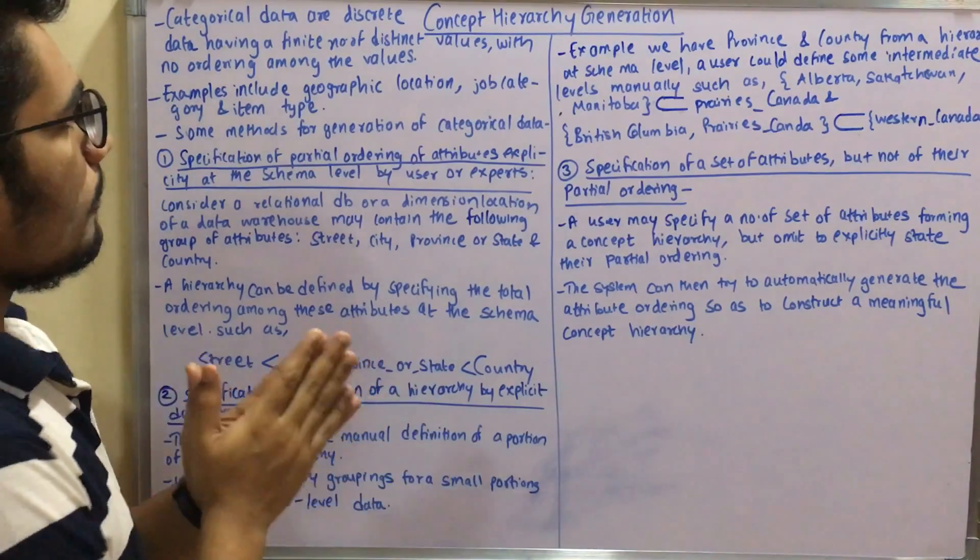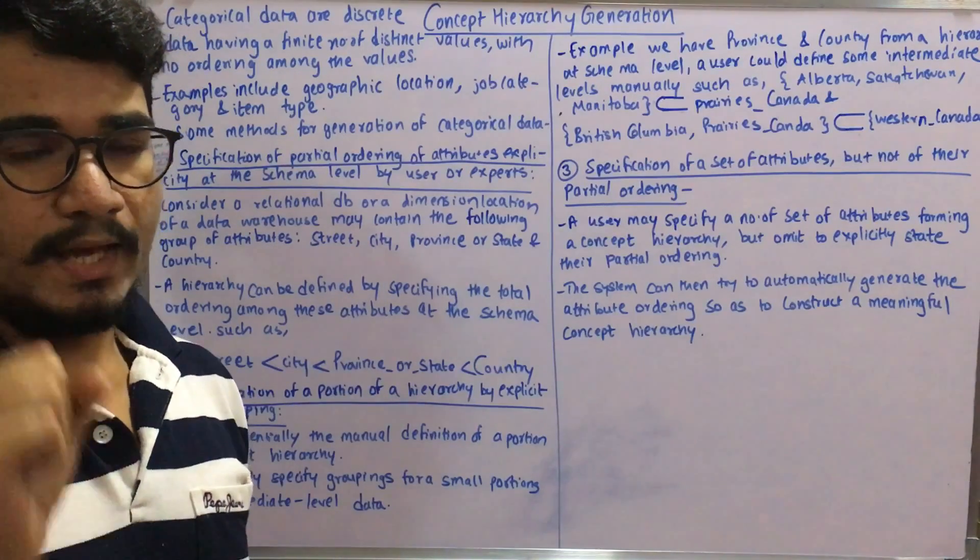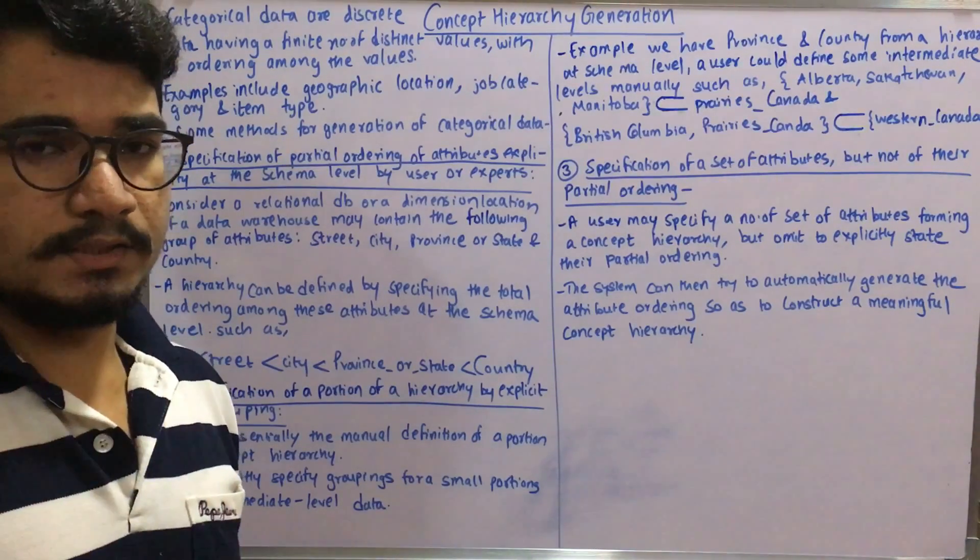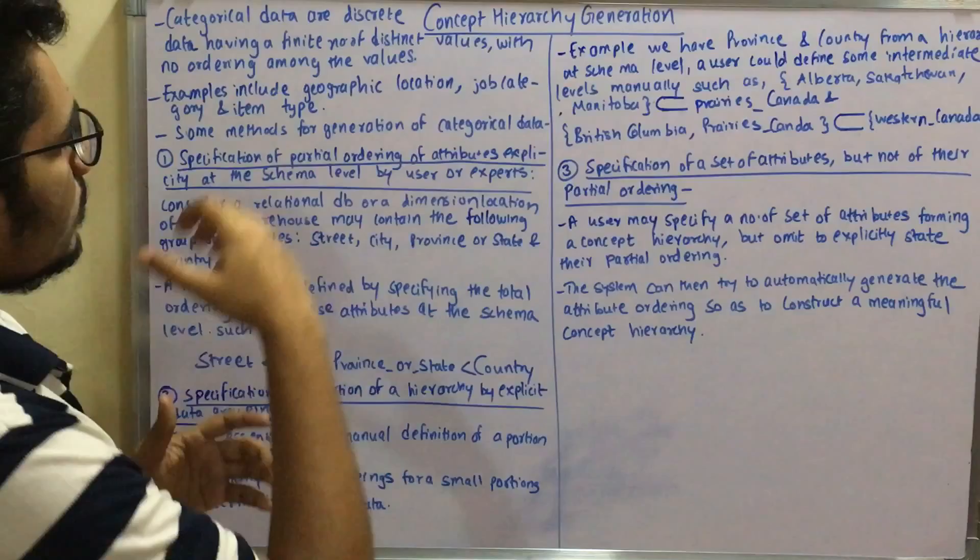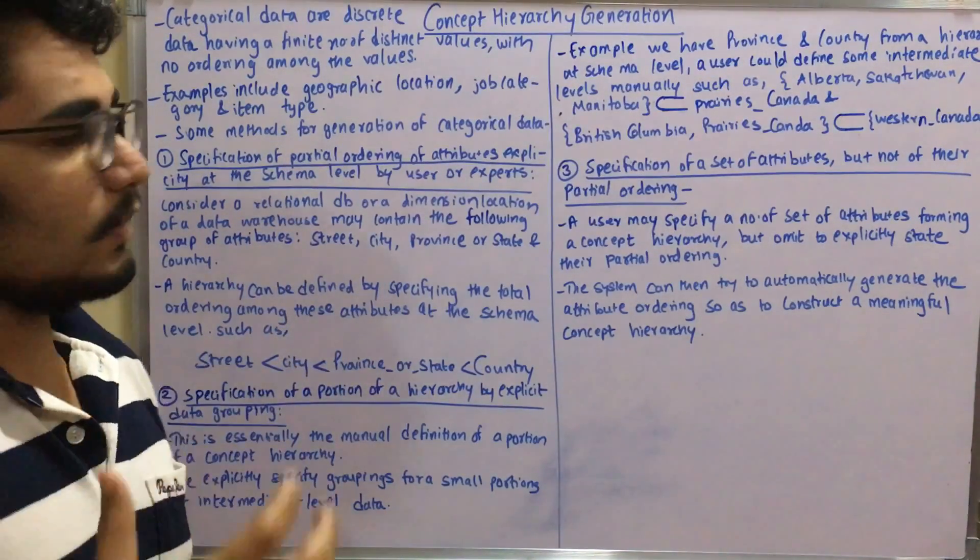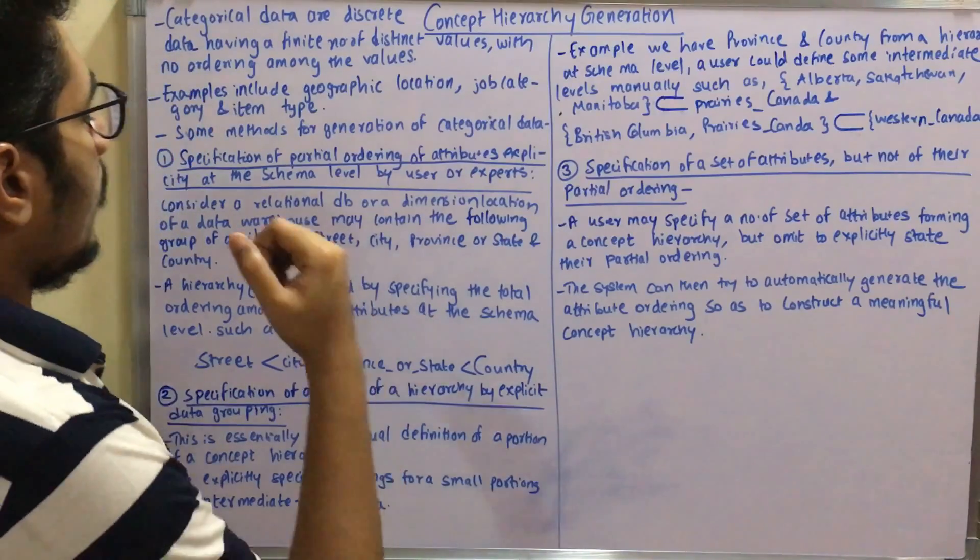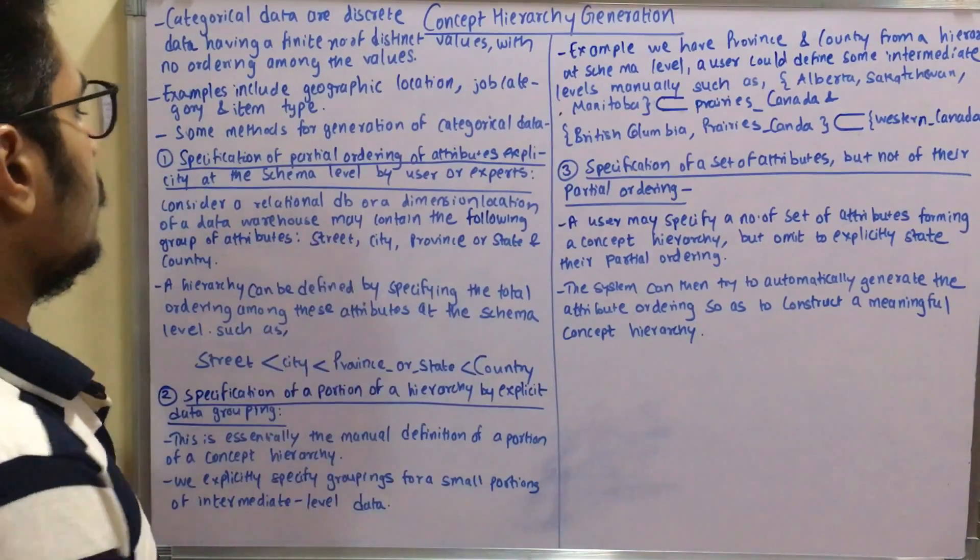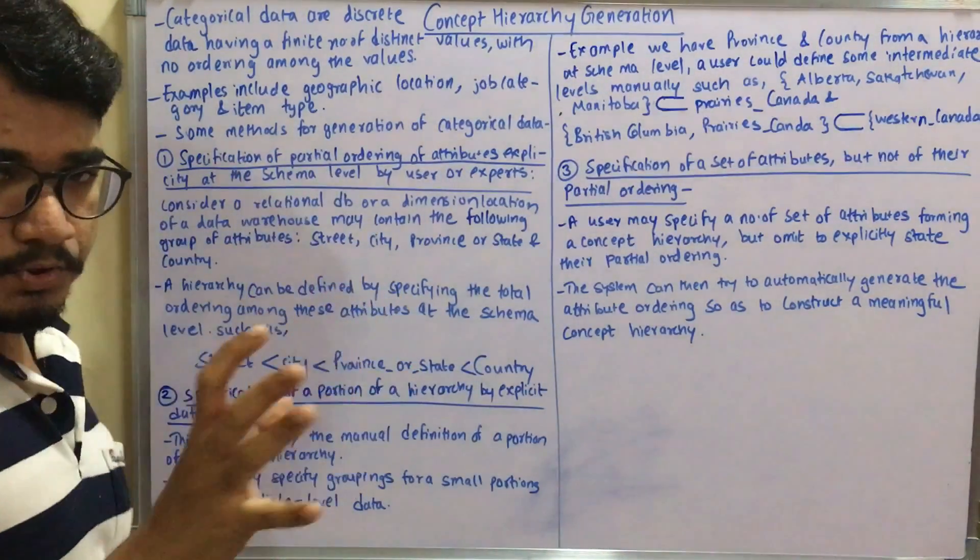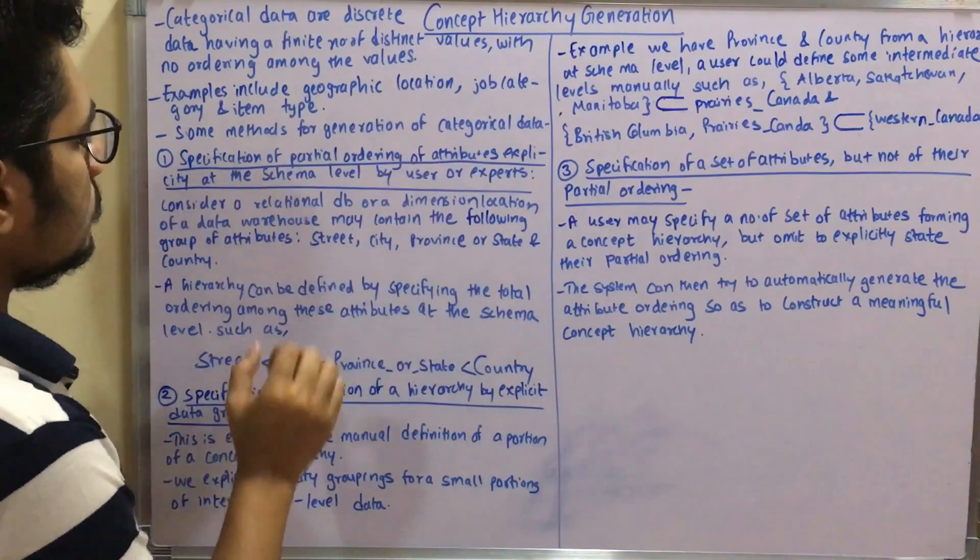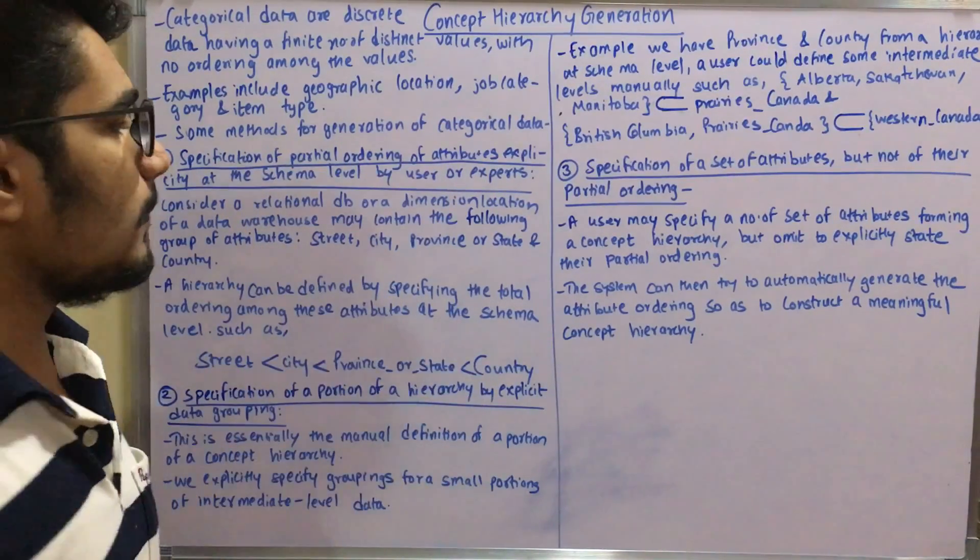What concept hierarchy generation as a step to dimensional reduction does is that there are some methods for concept hierarchy generation for handling categorical data. We have three steps in this.